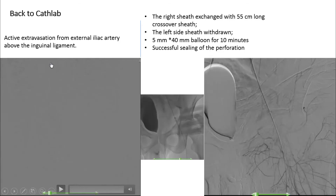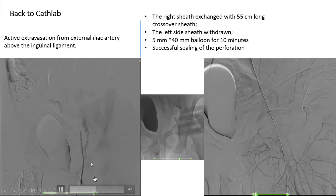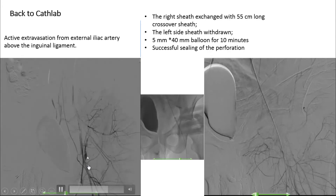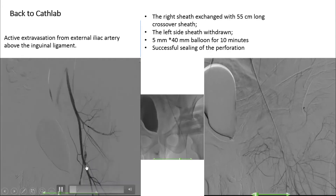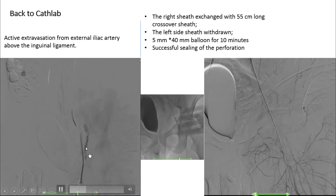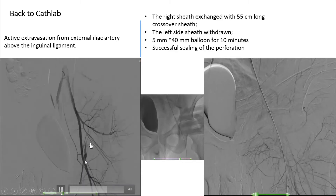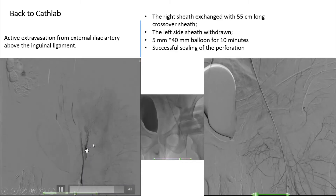Back in the cath lab, we injected from the left side sheath and you can see the perforation of the external iliac artery above the inguinal ligament, with extravasation of dye.